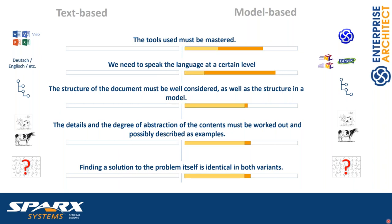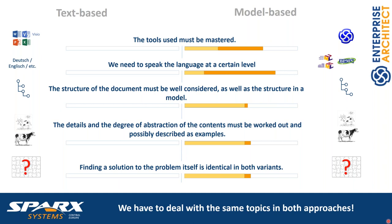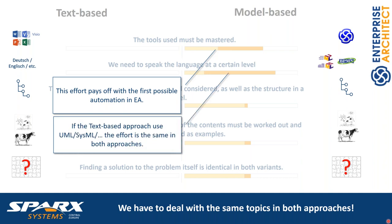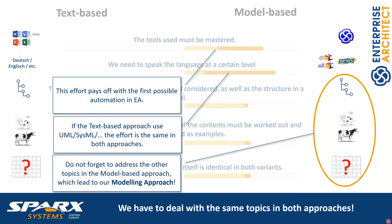We have to deal with the same topics in both approaches regardless of which one we choose. The effort for going with a modeling tool like Enterprise Architect pays off when you use the automations it provides. If you'd like to use UML or SysML in a text-based approach, you still have to learn the language — so the effort is more or less the same. Don't forget the other topics, because these are often forgotten and can prevent the success of your modeling approach.